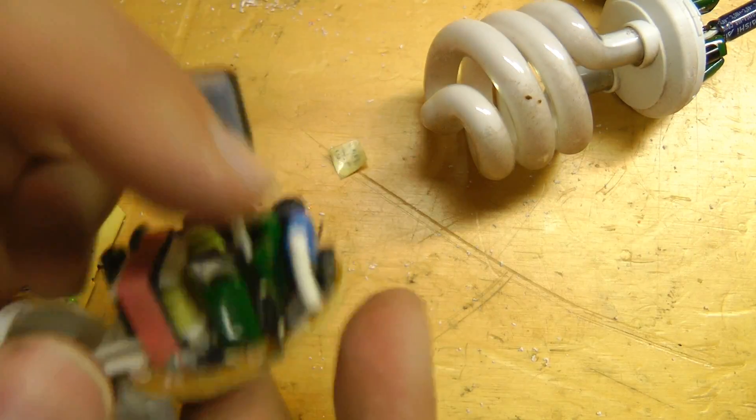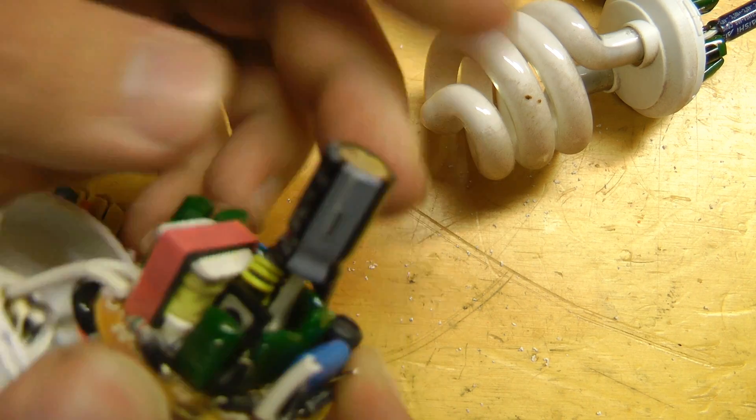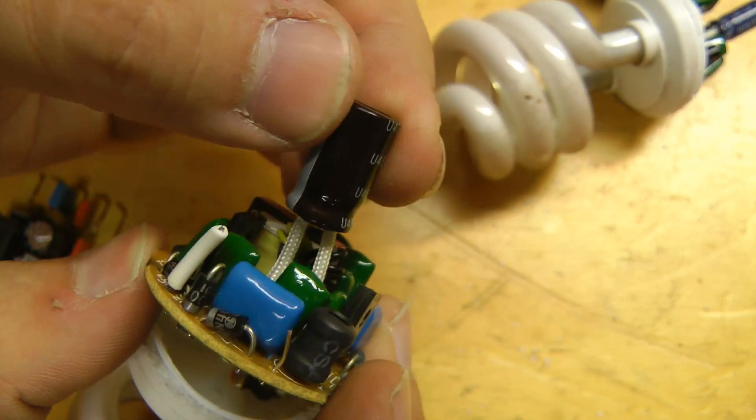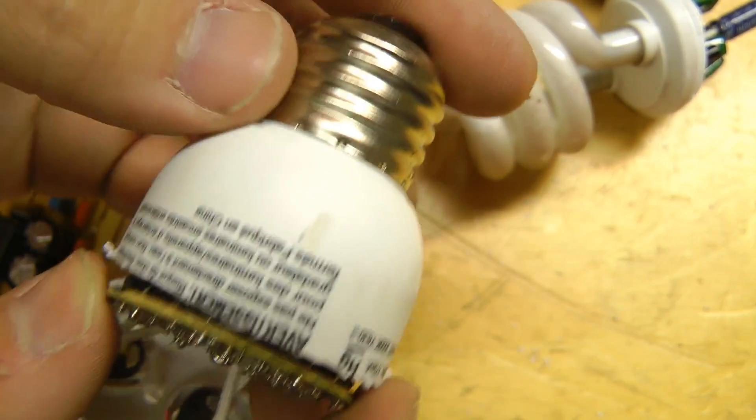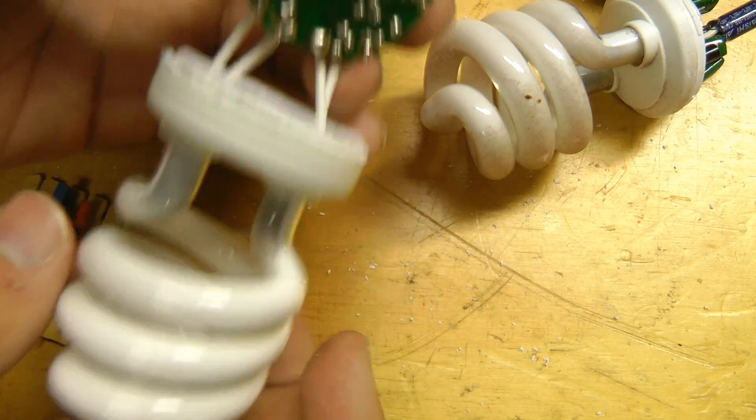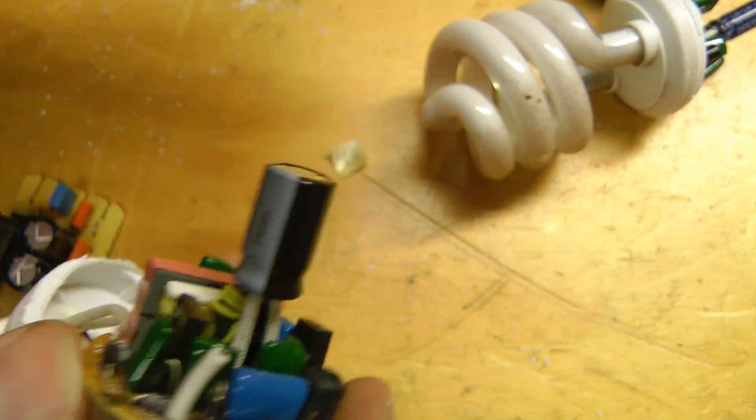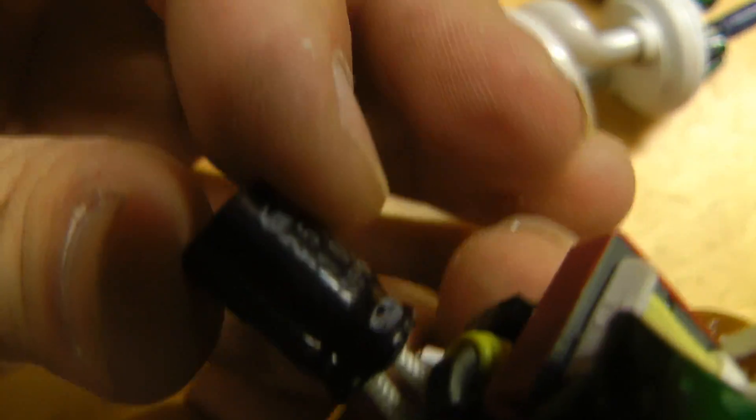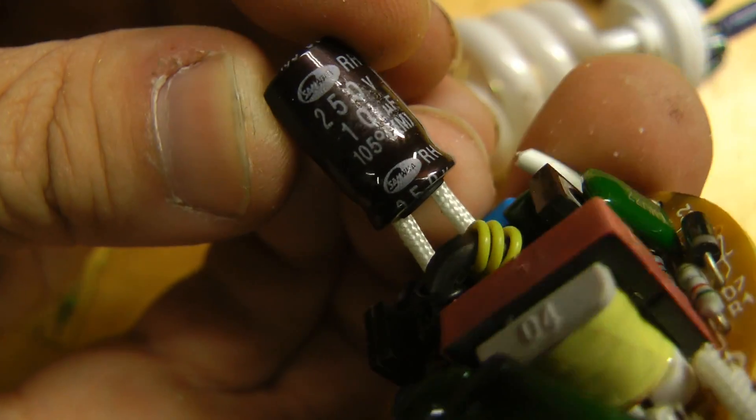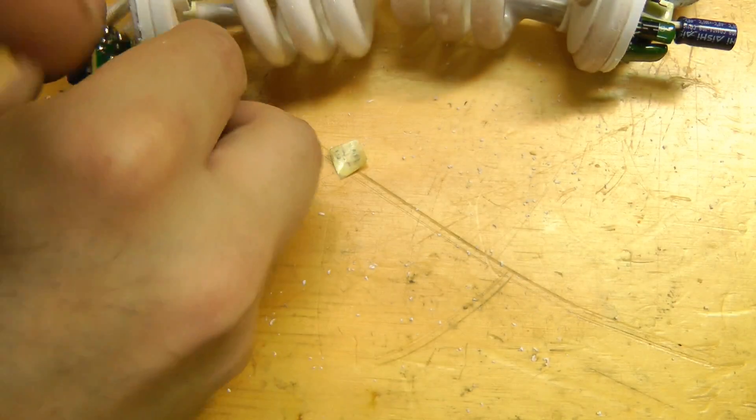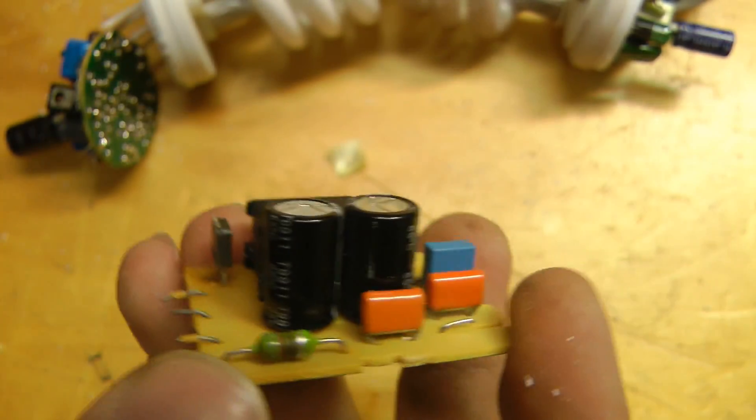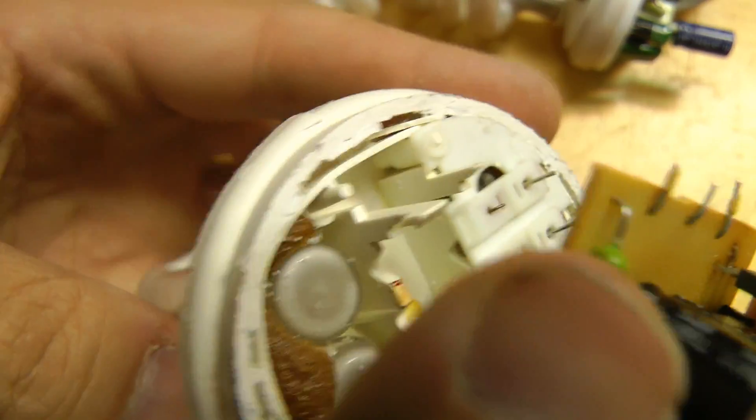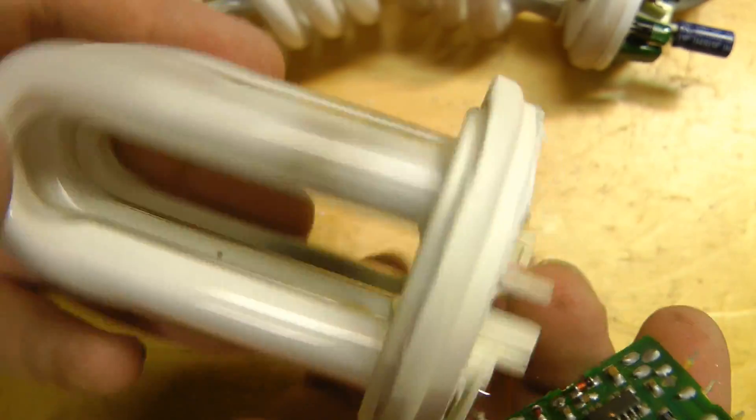One thing I do like on these ones is for space saving on the board, they've raised the cap up, but that does have the advantage of putting it up in the base, which is probably the coolest portion of the lamp. So it helps somewhat with capacitor life. This is also rated 105 degrees C and these ones are only 85 C. But I think because the lamp is so much bigger, it stays quite a bit cooler.